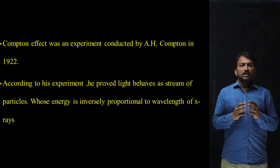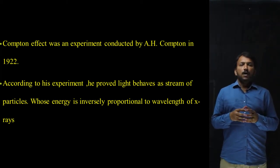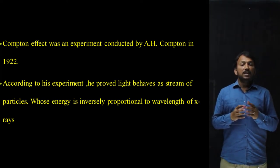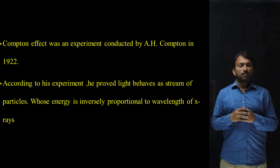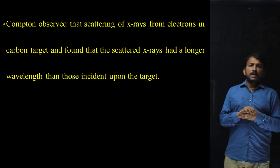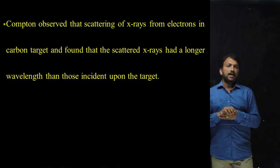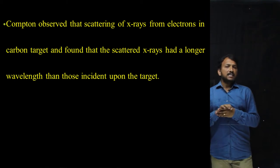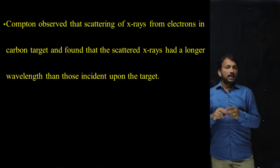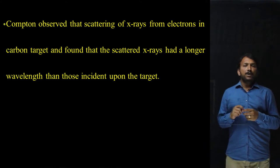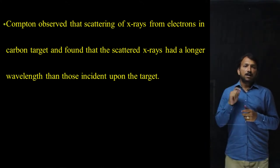The Compton effect is an experiment conducted by A.H. Compton in 1922. According to his experiment, he proved that light behaves as a stream of particles and the energy of these particles is inversely proportional to the wavelength of that light. Compton observed the scattering of X-rays from electrons in a carbon target, and the scattered X-rays consist of two components: one component having a higher wavelength than that of the incident, and another component having the same wavelength as that of the incident.